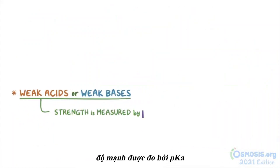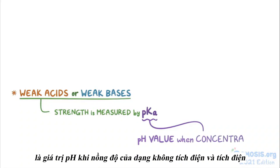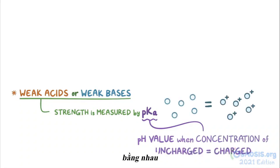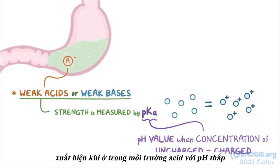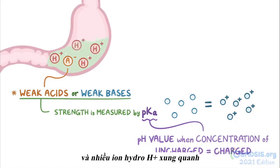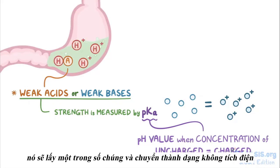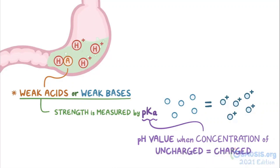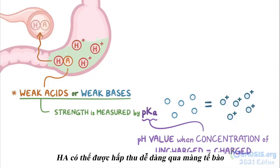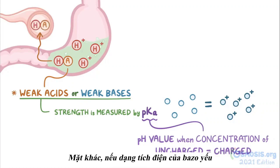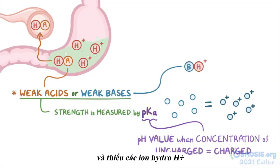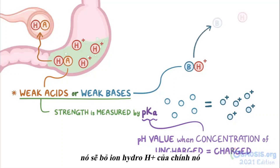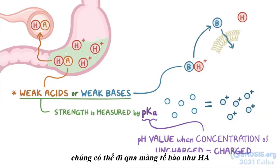The strength is measured by pKa, which is the pH value when concentrations of the uncharged and charged forms equal each other. When the charged form of a weak acid, A-, shows up in an acidic environment with a lower pH and plenty of hydrogen ions around, it will grab one of them and turn into its uncharged form, HA. HA can then be readily absorbed across the cell membrane. On the flip side, if the charged form of a weak base, BH+, is placed into an alkaline environment with a higher pH and a lack of hydrogen ions, it's going to give up its own hydrogen ion and become an uncharged B, which can then pass through the cell membrane just like HA.